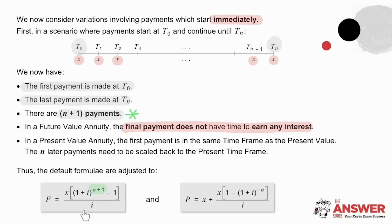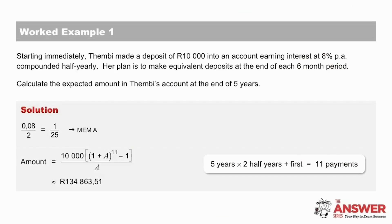As far as the present value annuity formula goes, if initially we were to ignore this very first payment made at T0, and first only consider all the other payments, then we could use the present value annuity formula for these payments exactly as it appears on the formula sheet. Now, to include the payment at T0, we need to be aware of the fact that this payment is in the same time frame as this P here, the present value, and so it simply needs to be added. Let's look at some examples now of how these variations can be applied.